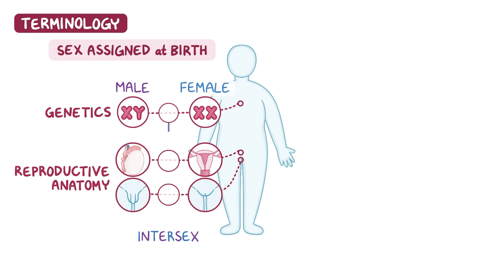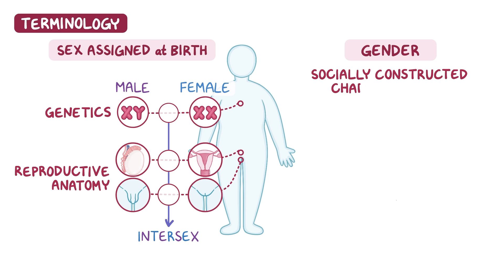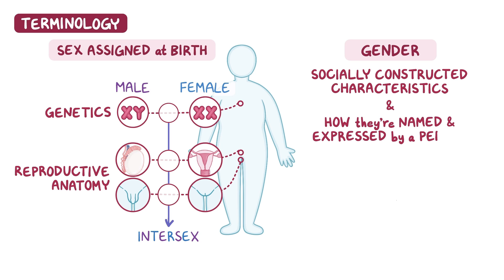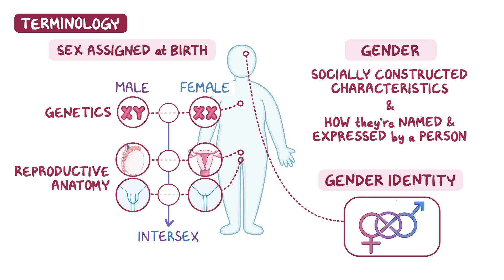Gender refers to socially constructed characteristics such as appearance, behaviors, and roles, and how those characteristics are named and expressed by a person. On the other hand, a person's gender identity is their inner awareness and naming of their gender, which may be the same as or different from their sex assigned at birth.